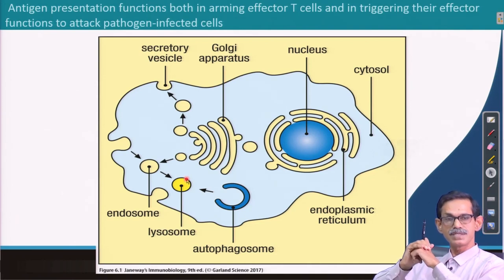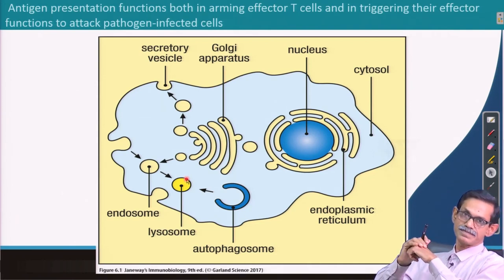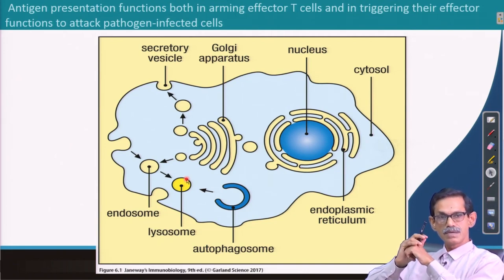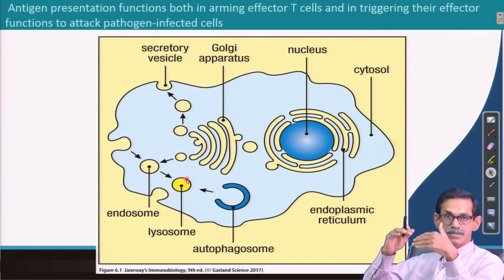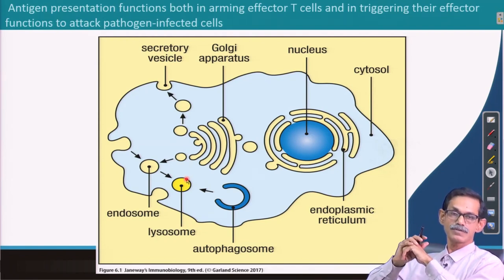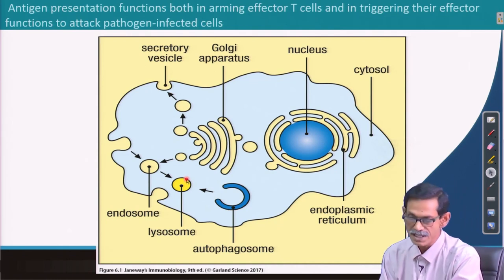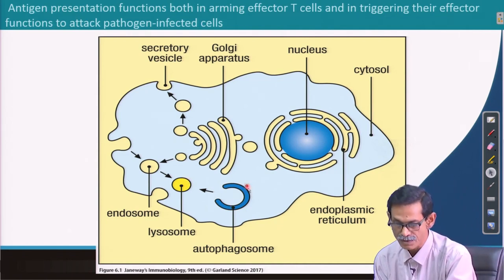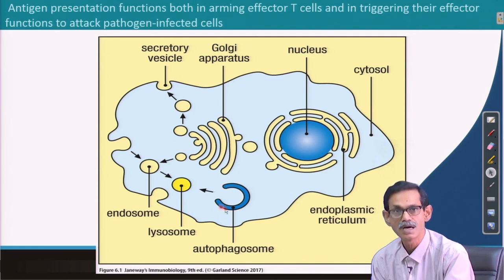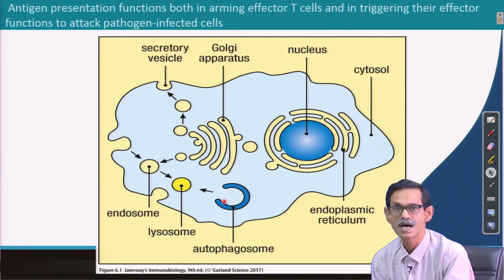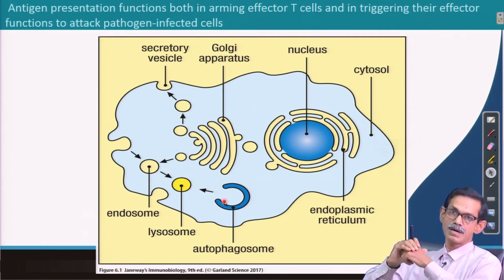Besides endocytosis, there is another process called autophagy. Autophagy is often misunderstood — it does not mean one cell eating another (that would be cannibalism). Autophagy means the cell makes vesicles that take up internal cellular material that is no longer needed, in order to recycle it. Intracellular material is chopped and reused for other purposes.